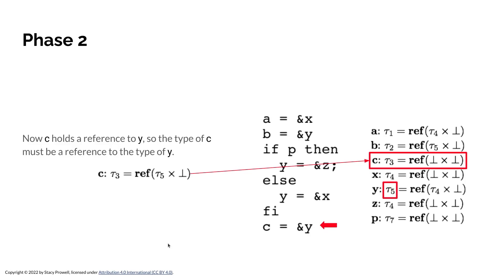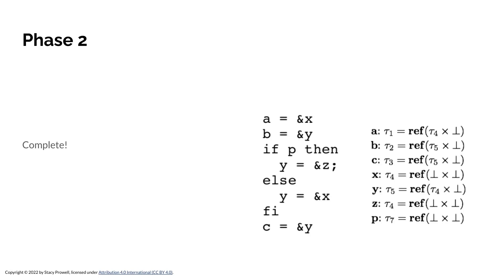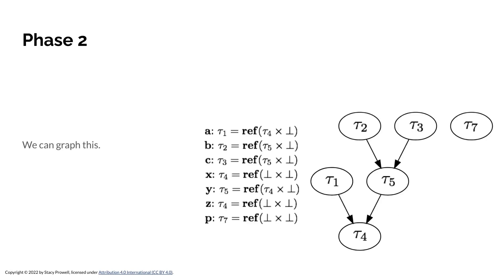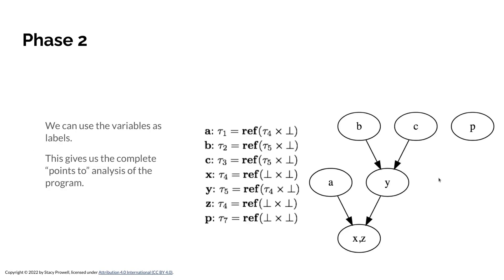C holds a reference to Y, so the type of C must be a reference to the type of Y. C has bottom in both slots, so we put tau5 in there. We now have the complete set of types — phase 2 is complete. From this we can draw the graph: tau1 can reference tau4, tau5 can reference tau4, tau2 and tau3 can both reference tau5, and tau7 is unrelated. We can also put variable names in to see which variables are allowed to refer to other variables — that's what we were ultimately trying to get out of the points-to analysis.